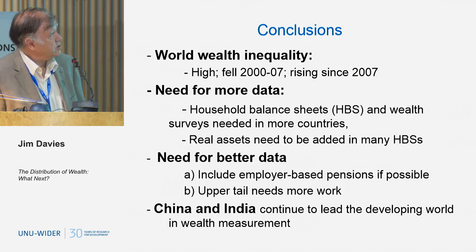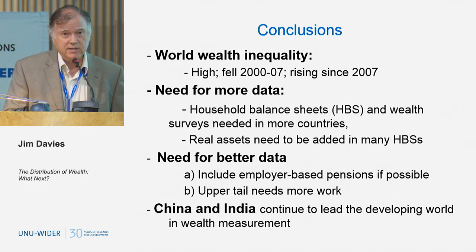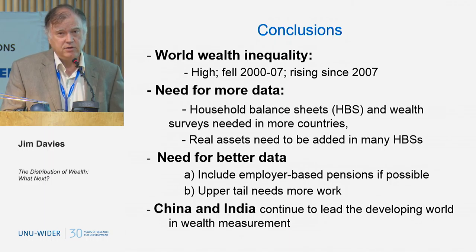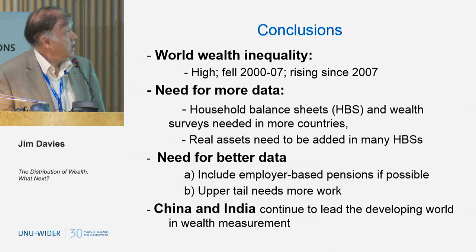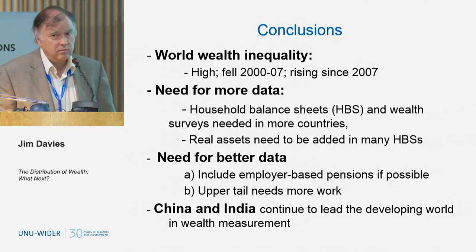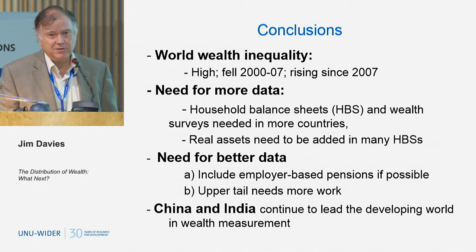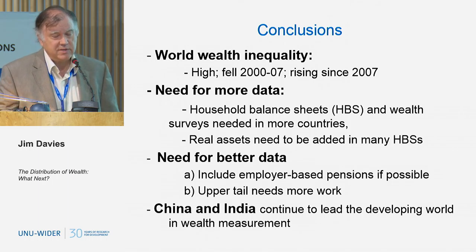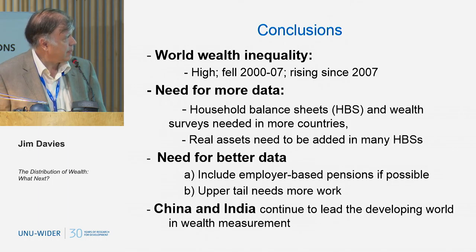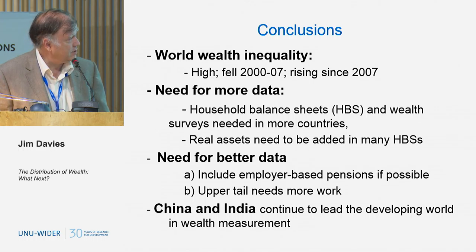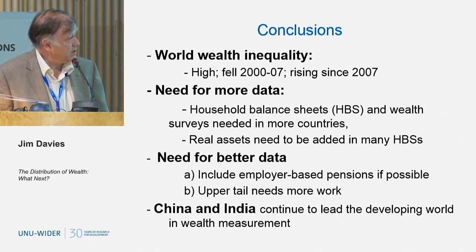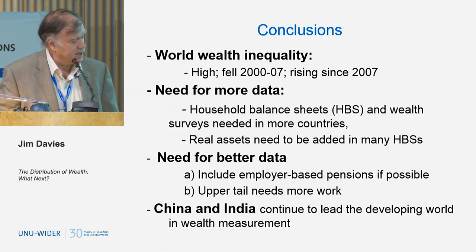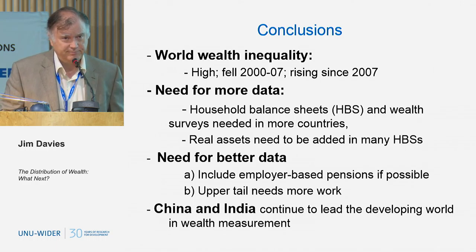My conclusions: first, world wealth inequality is high — it fell before the financial crisis and increased after. We need more data: household balance sheets and wealth surveys need to spread to more countries. There are examples to follow — South Africa is taking the lead on household balance sheets, and China and India have taken the lead on wealth surveys. There are also issues that need to be considered carefully: pensions and what to do about the upper tail. Thanks.